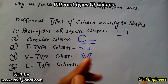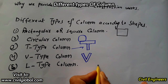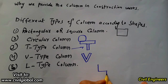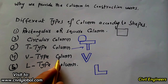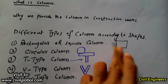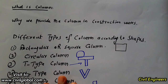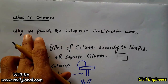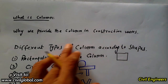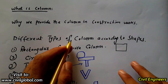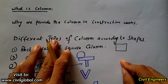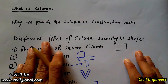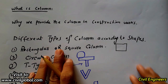The L-type column is shaped like the letter L. L-type columns are used for boundary walls, and their features are similar to a rectangular column. So these are the important types of columns — what is a column, why we provide columns in building construction works. Don't forget to like and subscribe, click the bell icon to get notifications, and visit my website at www.civilglobal.com. Thank you, all the best, bye.